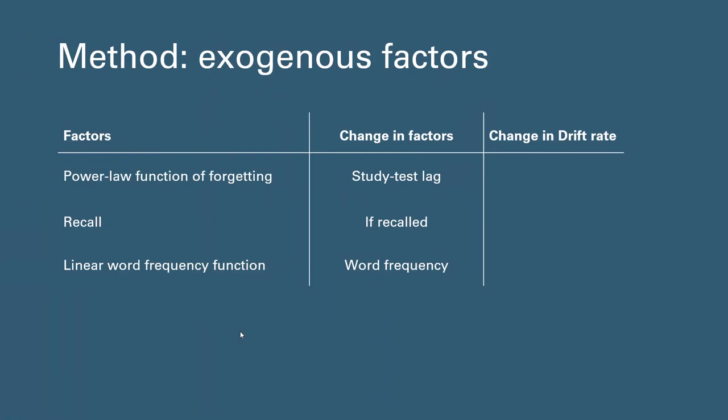Moving on to method, exogenous sources of evidence included in the study are first the power law function of forgetting, which assumes memory of an item decays as the lag between study and test increases. Therefore, as the lag increases, the drift rate decreases. Second, if an item was previously recalled, we also assume that item will more likely be remembered during recognition, therefore an increase in drift rate.